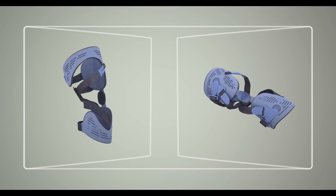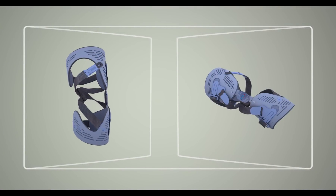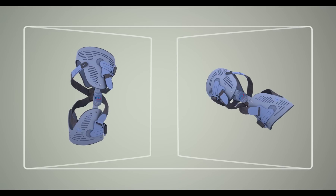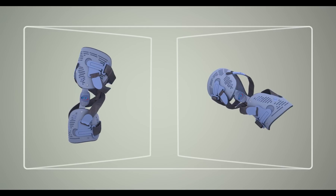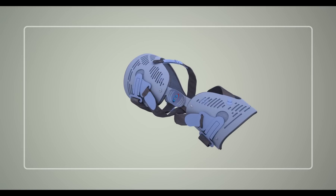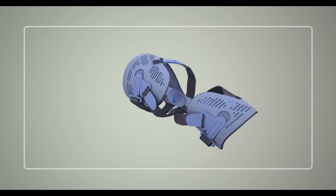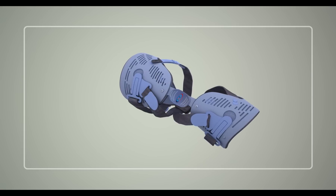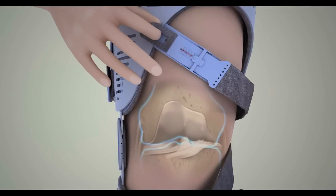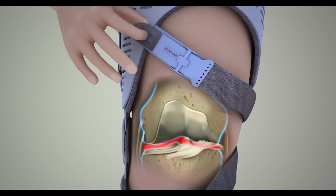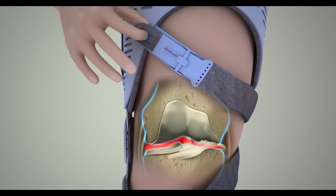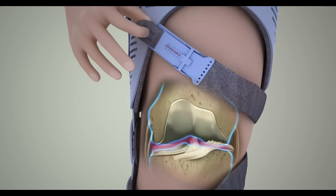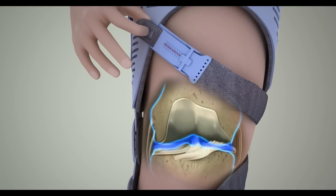Knee braces can help restore knee alignment, particularly during weight-bearing activities like walking. Knee braces for osteoarthritis are known as offloading braces, like Bragg's Fusion OA and Freestyle OA Knee Brace. Bragg OA Braces gently apply pressure to the unaffected side to align the knee, taking pressure off of the affected side of the knee.